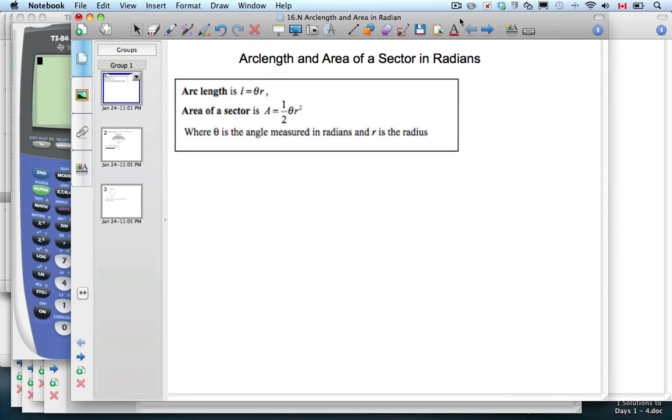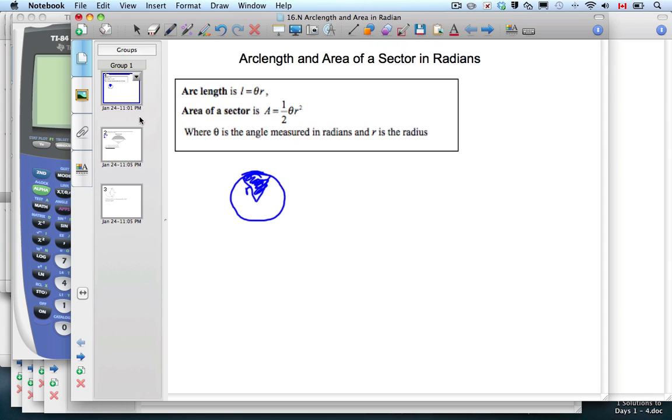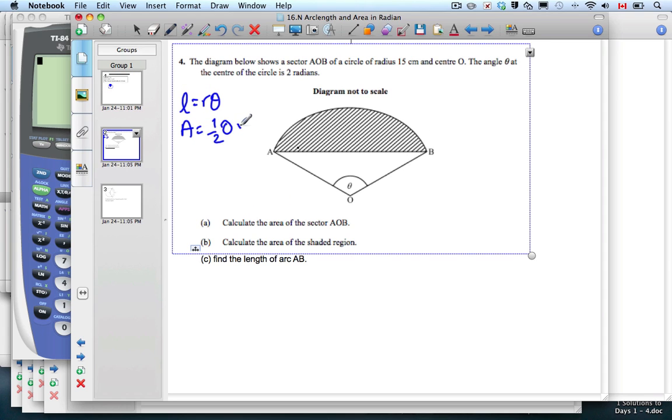Arc length and area of sector in radians. Previously we talked about arc length and area of sector in terms of degrees, and the formula was a little bit different. This one's for Pim who loves radians. We have these two formulas: L equals R theta, and area equals one half theta R squared, where theta is in radians and R is the radius.